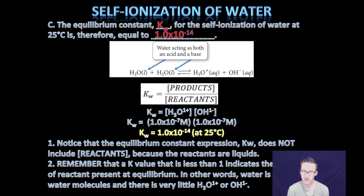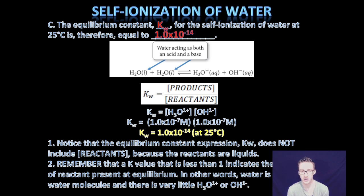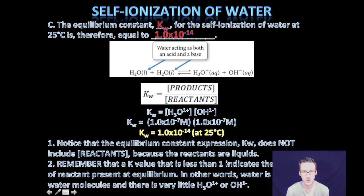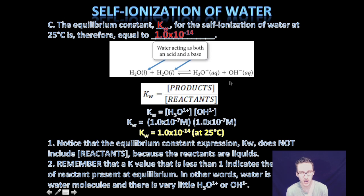A couple of things to keep in mind. Notice that the equilibrium constant expression does not include the reactants. When writing equilibrium constant expressions, we never include pure liquids or pure solids — and the reactants here are both liquids, so they are not included. Also remember that a K value less than 1 indicates there is a lot of reactant present at equilibrium. In other words, a beaker of water is in fact mostly water molecules, but there are small concentrations — exactly 1×10⁻⁷ molar — of both hydronium and hydroxide at 25°C.